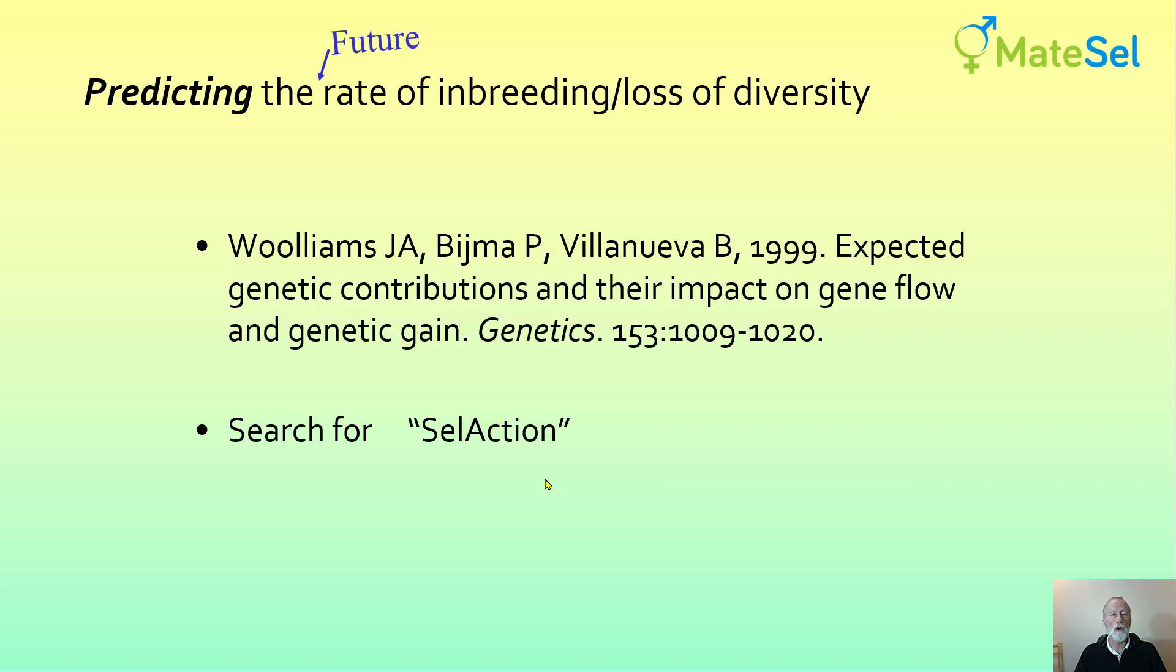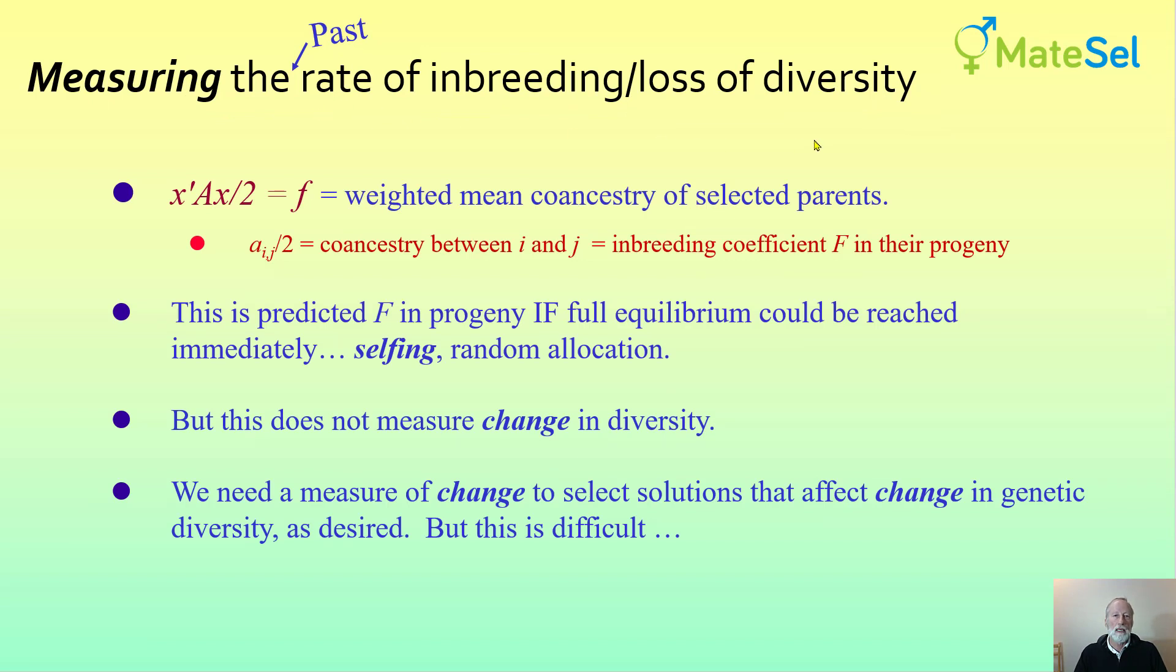What I want to do now is look at measuring past rates of inbreeding and loss of diversity, and that gives us some feel for the current issues. Co-ancestry, as we use it here, denoted by little f - if we take an element from the numerator relationship matrix and divide it by two, that is the inbreeding coefficient we will get in the progeny between those two animals. Little f does not measure the change in diversity. We need a measure of change in parental co-ancestry to help us conserve genetic diversity in the long run.